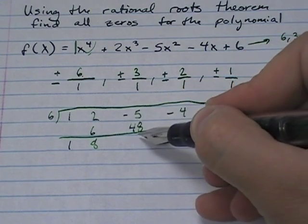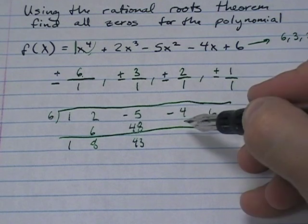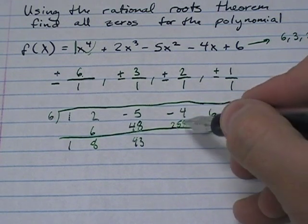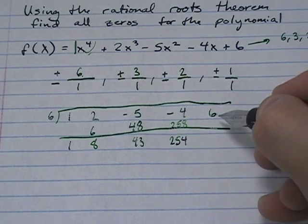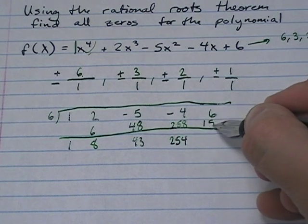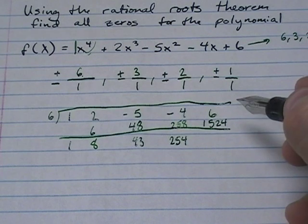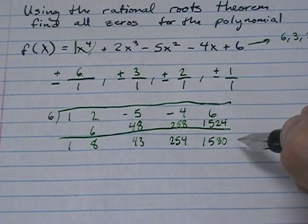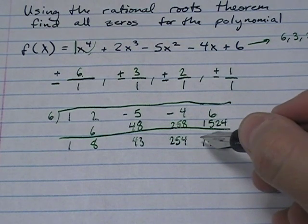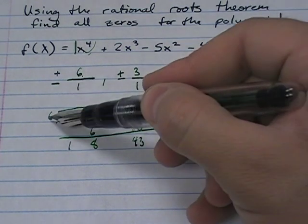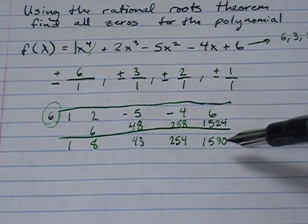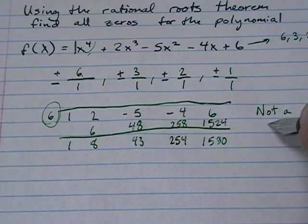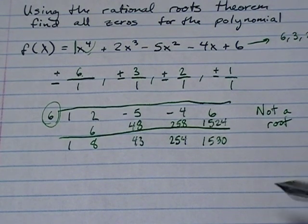We copy and multiply, giving us eight. Multiply and add, giving us 43. Multiply, giving us 258. Add, giving us 254. Multiply, giving us 1524. Add, giving us 1530. If this were a zero, the remainder would be zero — so six is not a root.